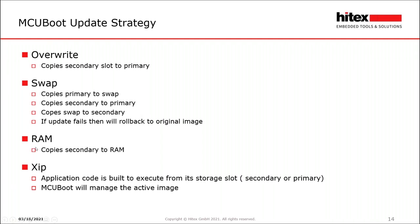We can also boot code into RAM by copying the secondary image into a RAM region and executing from there. Finally, there's execute-in-place, where we have primary and secondary slots and simply program the image into the free slot. If validated, it becomes the active image — we start executing from the secondary slot, and on the next upgrade we go back to the primary slot, ping-ponging between them. This means the code must either be built as position-independent code or rebuilt each time to execute from the slot where it will be stored.